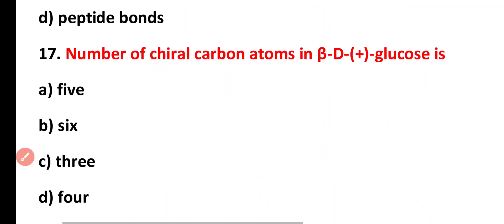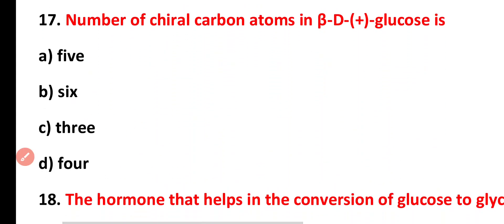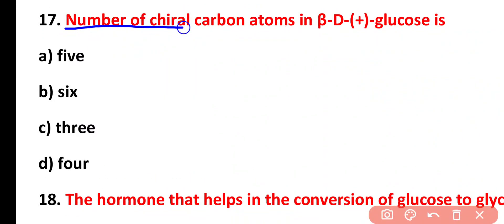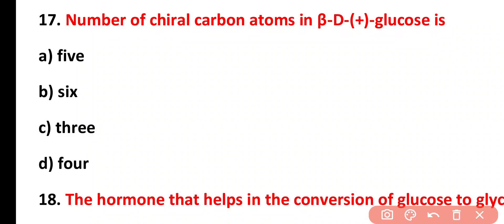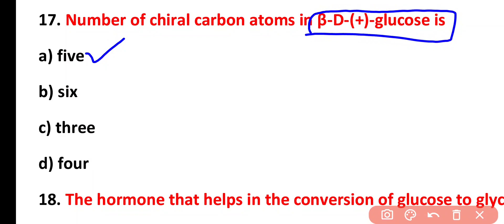Question seventeen: the number of chiral carbon atoms in beta-glucose is five, six, three, or four. The correct answer is option A. There are five chiral carbon atoms present in beta-glucose.